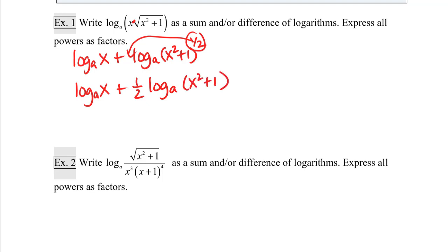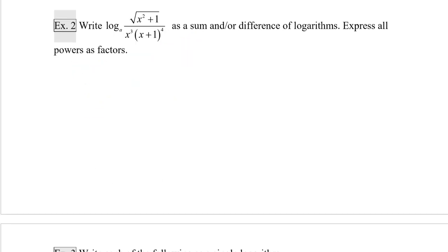Finally, this becomes log base a of x plus one-half log base a of x squared plus one. Notice that x squared plus one is not a product, so I can't pull that apart any further, so I am done. Example two: write log base a of the square root of x squared plus one divided by x cubed times x plus one to the fourth as a sum and/or difference of logarithms, expressing all powers as factors.